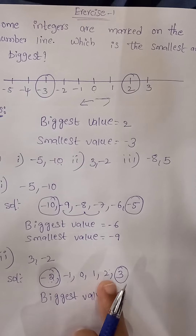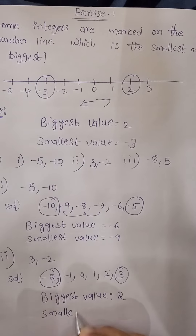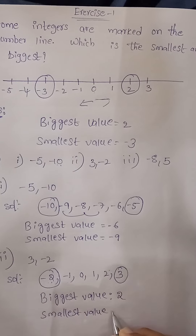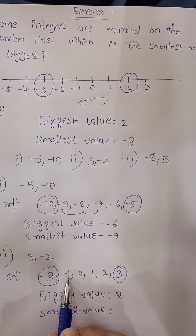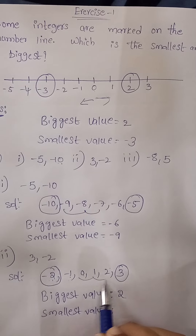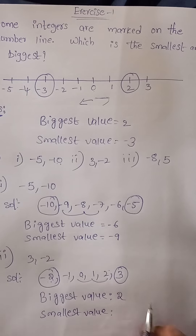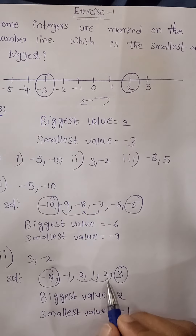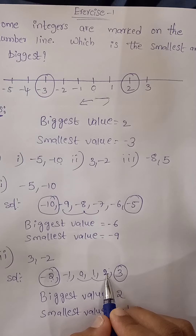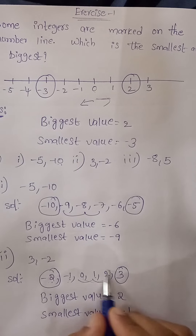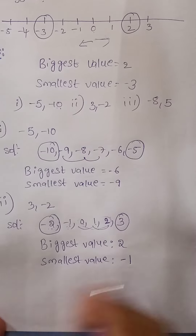The integers between minus 2 and 3 are minus 1, 0, 1, and 2. Minus 1 is on the left side of all these numbers, so the smallest value is minus 1, and 2 is on the right side of these numbers so the biggest value is 2.